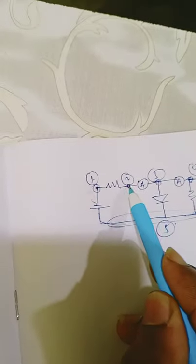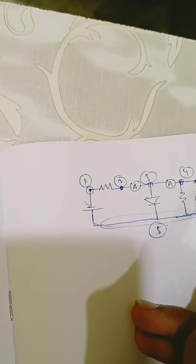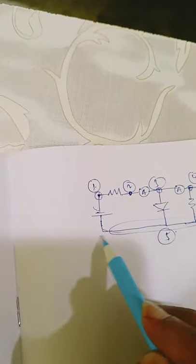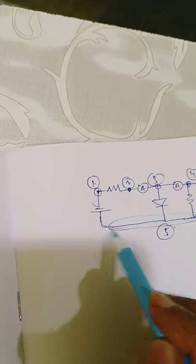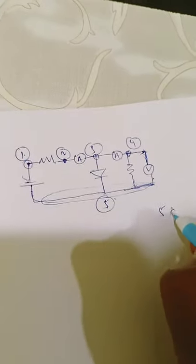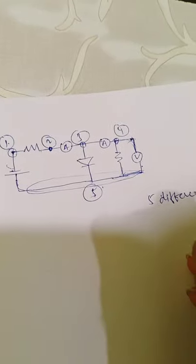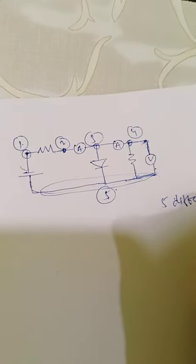So we have a single potential node at point 5. You can find different potentials at nodes 1, 2, 3, and 4. Every point at node 5 is connected to a single potential. In total, we have found 5 different potential nodes in this circuit.